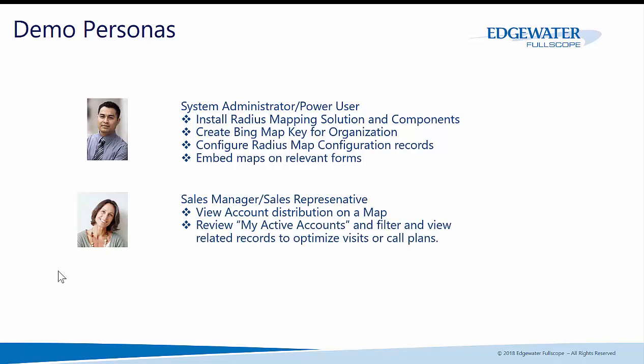The second persona is the sales manager or sales representative. This allows them to view account, contact, or lead distributions on the map, leveraging clustering to see how many of their accounts are near each other. They can review their active accounts and filter them to optimize visits and call plans.